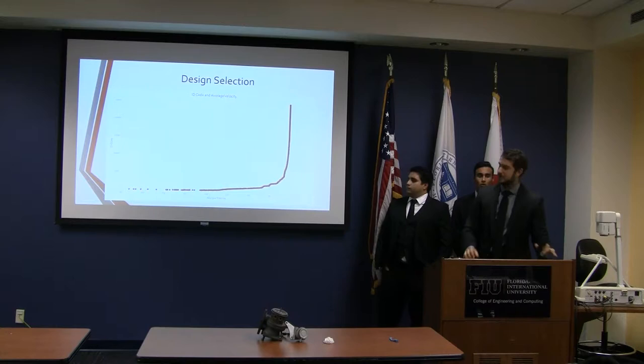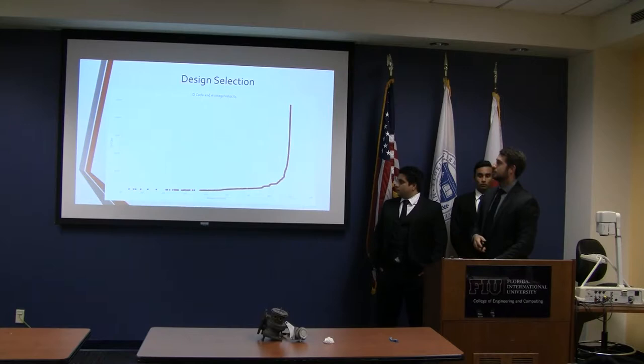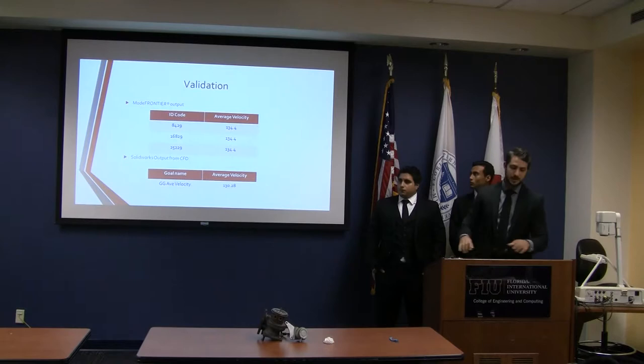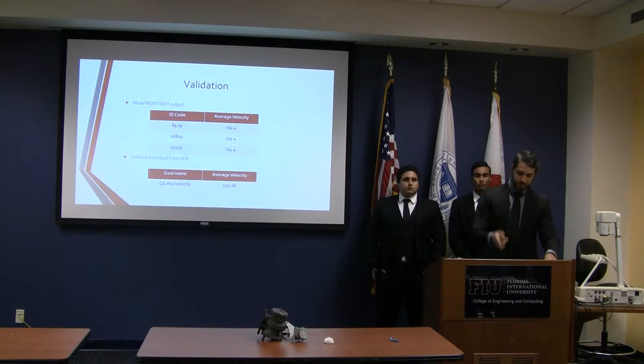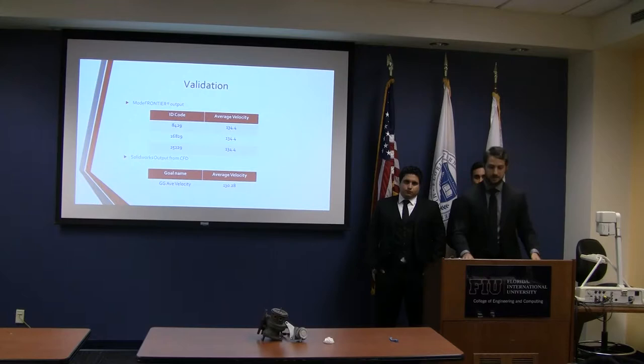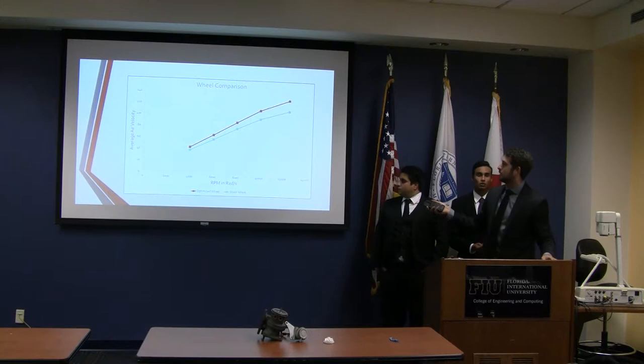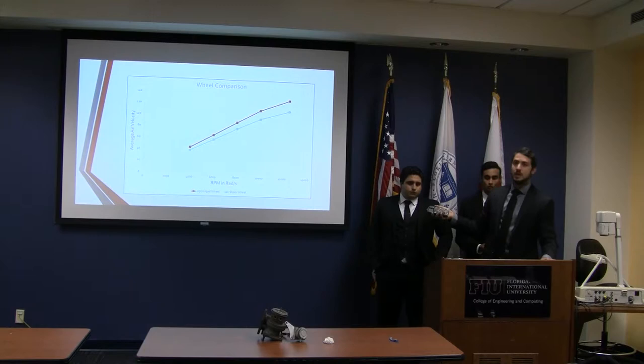For design selection, we went over 25,000 different designs and the goals converge on 134.4 meters per second. Comparing ModeFrontier to SOLIDWORKS: ModeFrontier gave 134.4 and SOLIDWORKS gave 130.28 — within 5%, which is what we wanted. Comparing the optimized wheel to the stock wheel, we are generating more speed at less RPM, which is better.